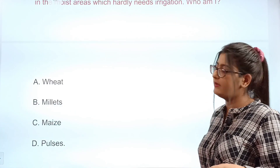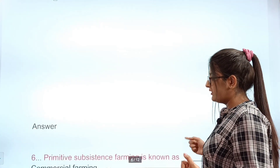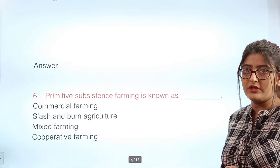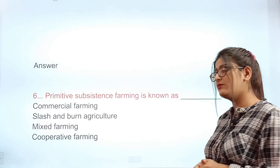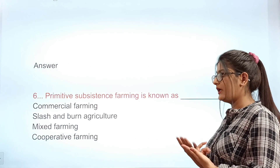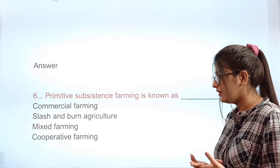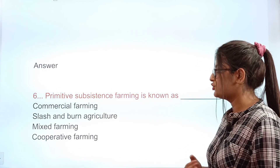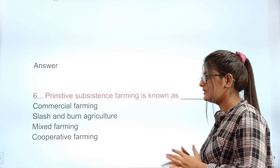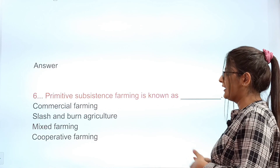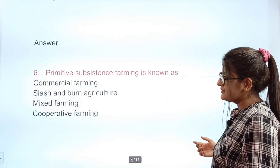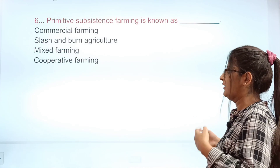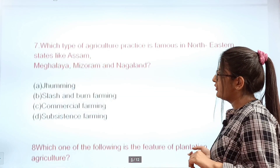Primitive subsistence farming is also known as what? Options: A commercial farming, B slash and burn agriculture, C mixed farming, D cooperative farming. The correct answer is B — slash and burn farming. That is what we call primitive subsistence farming.